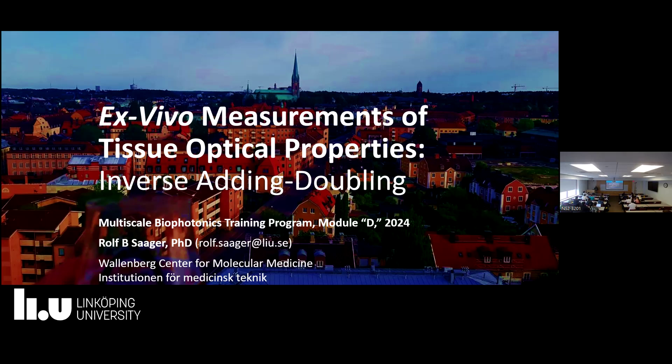We will go through the concept of transitioning towards inverse solutions versus forward models — what those differences are — and then in this particular case, what this forward model is, how it works, how it addresses the issues already pointed out with radiative transport, and then get into the practical stuff of: if this is how it works, this is how you can get optical properties from it, how do you actually make the measurement, what do you really need to think about, and where does model and experiment start to deviate from each other.